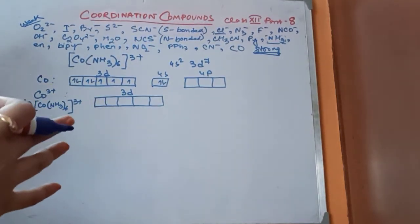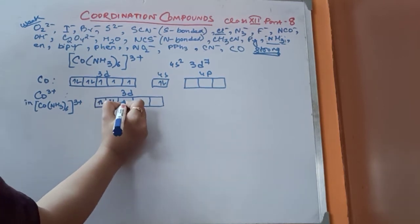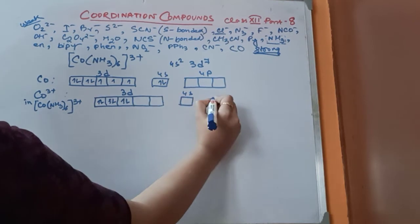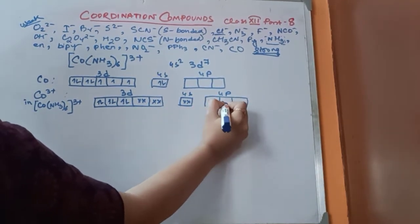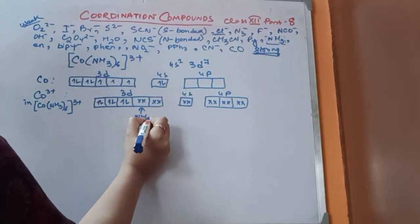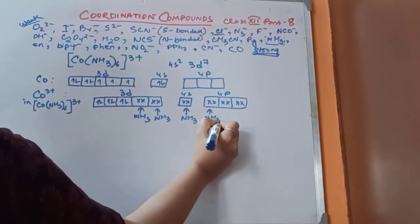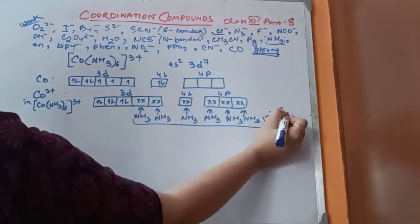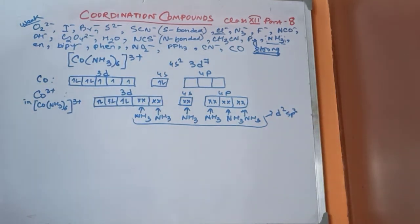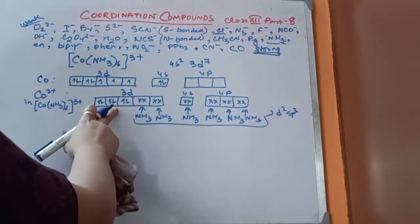Since ammonia is towards the stronger field side, it will pair up the electrons in this complex. So the 6 electrons here are paired up, leaving vacant 4S and vacant 4P orbitals. This gives D2SP3 hybridization. This complex is diamagnetic.